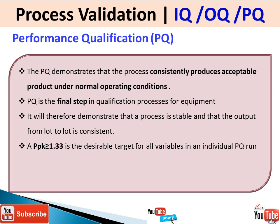Performance qualification demonstrates that the process consistently produces acceptable product under normal operating conditions. PQ is the final step in the qualification process for equipment. It demonstrates that the process is stable and that the output from each lot is consistent. Here we look at Ppk values, which should be greater than or equal to 1.33, equivalent to a four-sigma level.